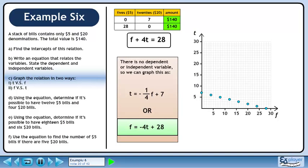Now we'll graph f equals minus 4t plus 28. Swap the axis labels and re-plot the points.